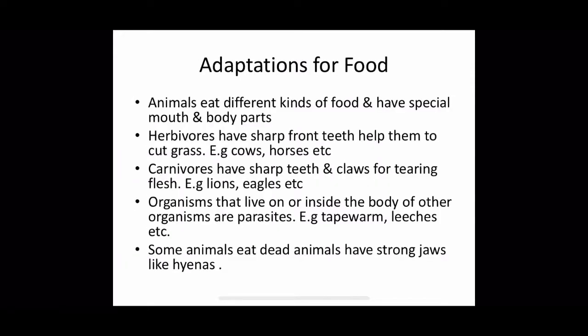Now, adaptations for food. Animals eat different kinds of food and have special mouth and body parts. Herbivores have sharp front teeth that help them cut grass — like cows, horses, etc. Carnivores, who eat flesh, have sharp teeth and claws for tearing flesh — like eagle, lions, etc. Organisms that live on or inside the body of other organisms are parasites, like tapeworm, leeches, etc. Some animals eat dead animals and have strong jaws, like hyenas.